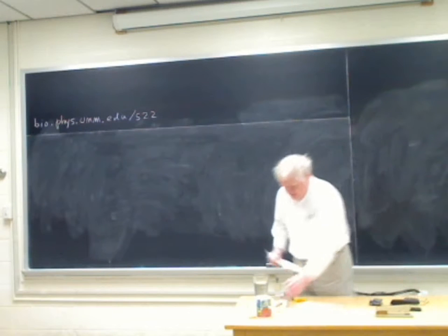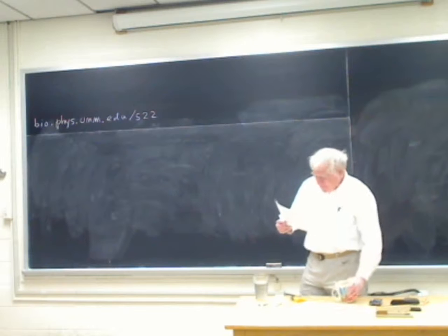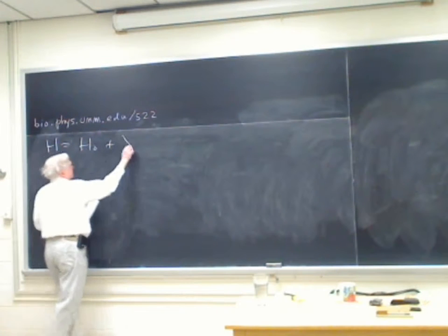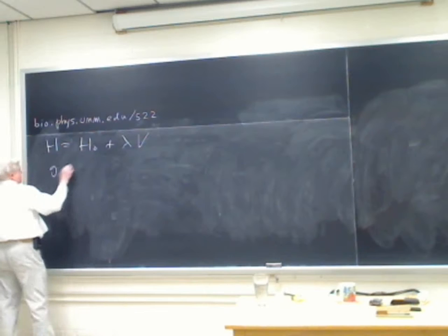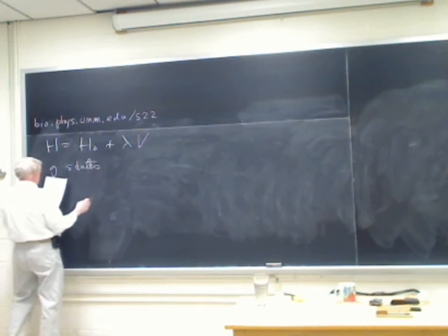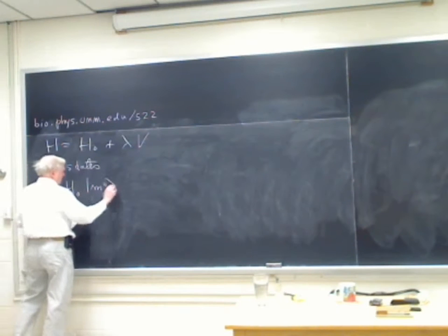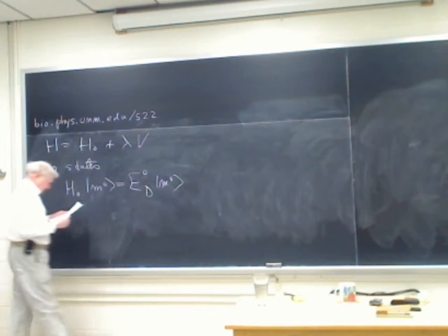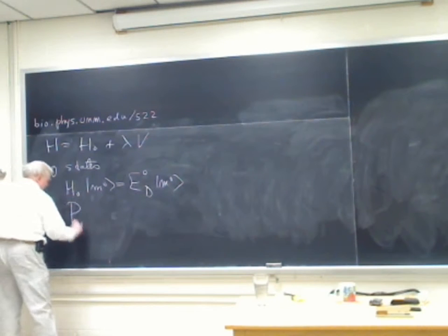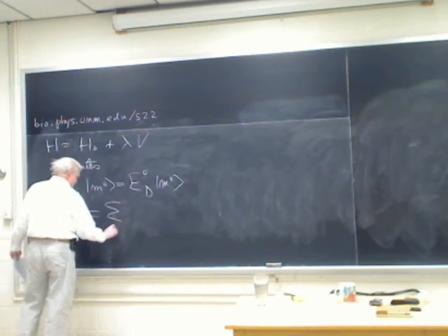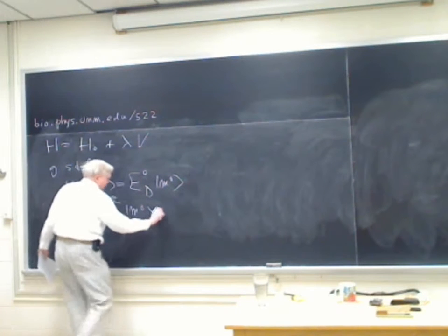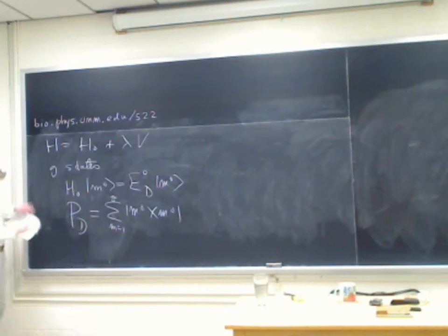Let me start by assuming we have a Hamiltonian H, which is H0 plus λV, and we have G states that are degenerate. We can label them as M, and they all have the same energy E_D0. We can make a projection operator on the subspace, which is the sum M equals 1 to G of |M0><M0|. This is the projection operator on the space spanned by the degenerate eigenstates of the simple Hamiltonian.